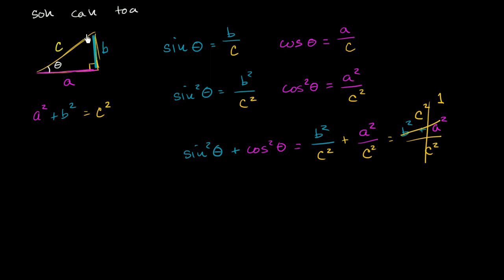So using the SOHCAHTOA definition, and in a future video we'll use the unit circle definition, but you see just even using the SOHCAHTOA definition of our trig functions, we see probably the most important of all the trig identities: that the sine squared of an angle plus the cosine squared of that same angle is going to be equal to one.